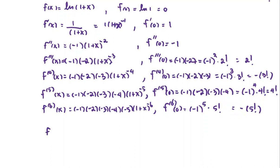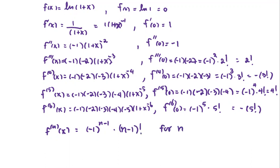We can now predict that the n-th derivative of the function is negative one to the power n minus one multiplied by n minus one factorial, for n greater than or equal to one, since the first non-zero coefficient occurs at the first derivative.